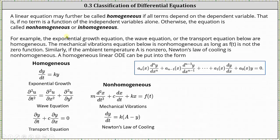For some examples, the exponential growth equation, wave equation, and transport equation, all shown below on the left, are homogeneous — no term is a function of the independent variable or variables. You may notice for the first two equations the right side is not equal to zero, but that doesn't matter. As long as we have a linear equation where no term is a function of the independent variables alone, we do have a homogeneous linear ODE.